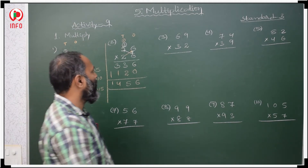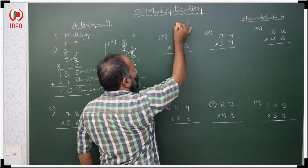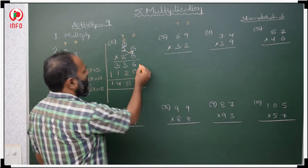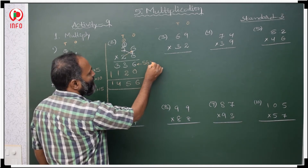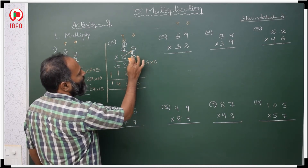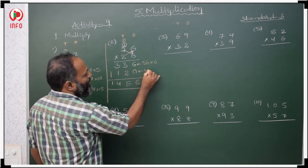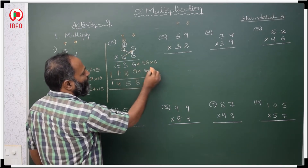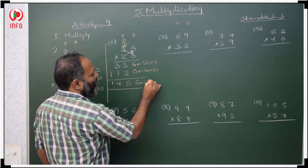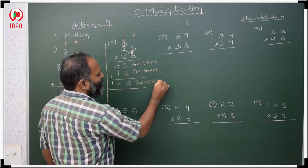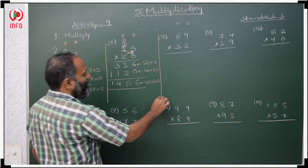Now after this: ones place, tens place. This is 56 with 6, and this one is 56 with 20. So it is the final product — 56 with 26.